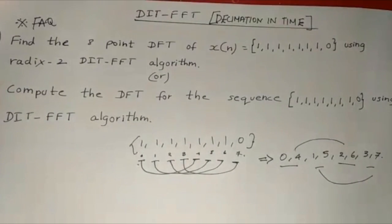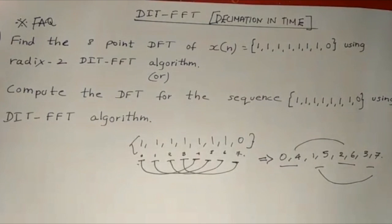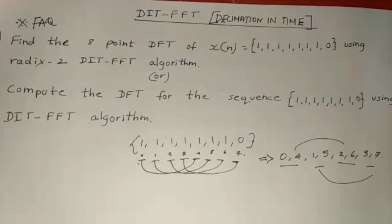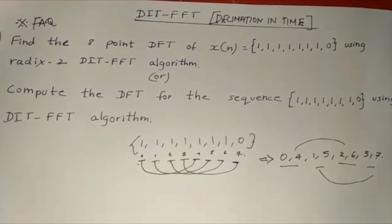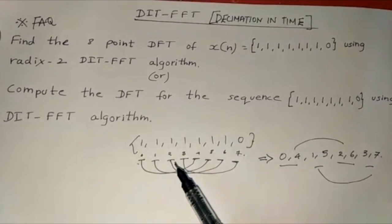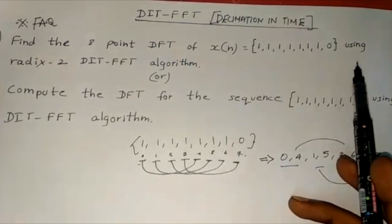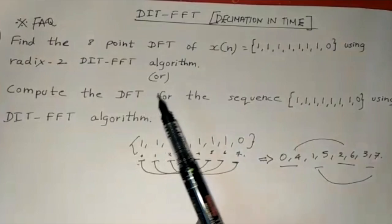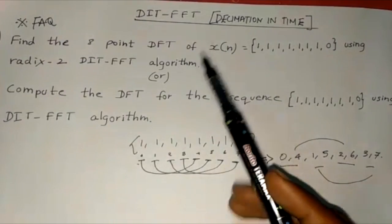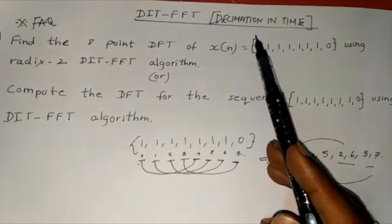Hey guys, welcome to AllClearTube. Now we are going to see how to compute the 8-point DFT using the DITFFT algorithm. This is the most frequently asked question in DSP. The question will be given like this: find the 8-point DFT of x(n) equal to a sequence of numbers using the radix-2 DITFFT algorithm. DIT stands for decimation in time and FFT stands for fast Fourier transform.